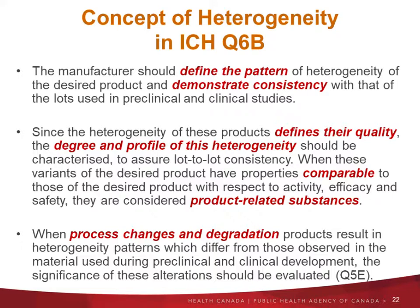What is really important is that the manufacturer should define the pattern of heterogeneity of the desired product and demonstrate consistency with the lots used in the preclinical and clinical studies — this is what we really look at as a regulator. When they develop their early batches for preclinical and clinical data, they have safety and efficacy data. When they move to commercial process, they must bridge that data and demonstrate consistency in the pattern of heterogeneity. When variants have comparable properties to the desired product, they are considered product-related substances. When the activity is different, they are considered product-related impurities.